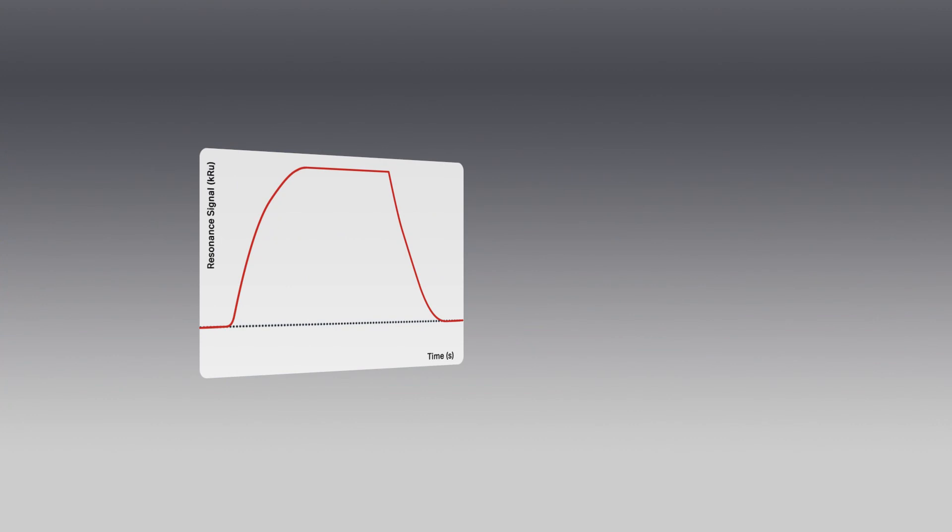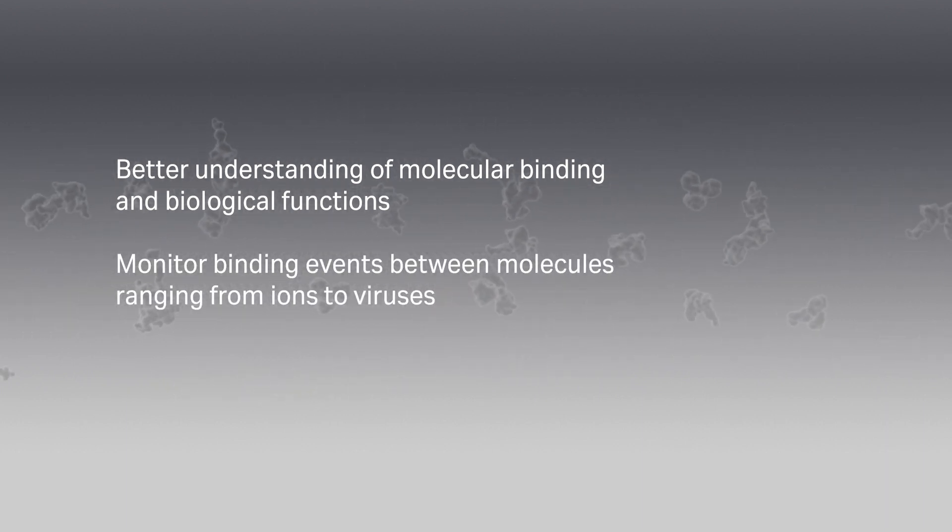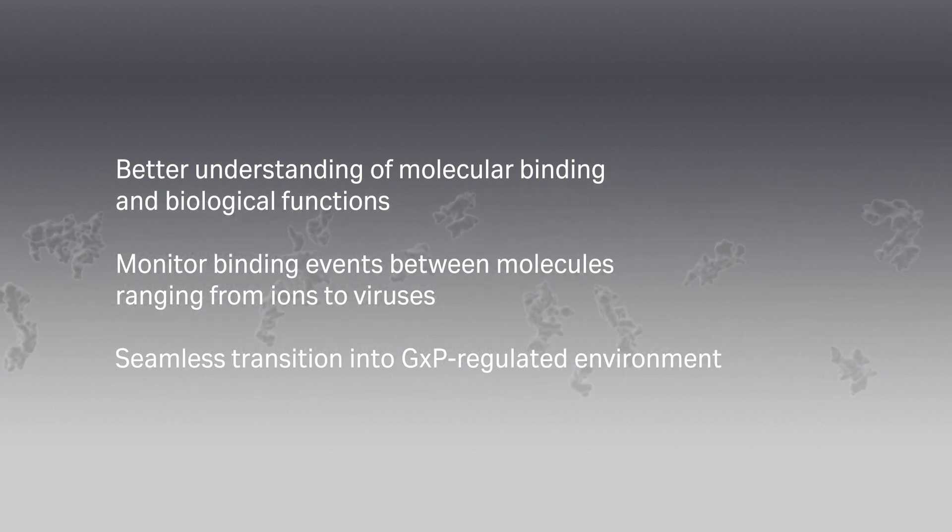From studying the shape of the sensorgram produced, binding yes or no, specificity, affinity, kinetics, and active binding concentration can be determined. The sensorgram provides real-time information about the entire interaction. This means that in a single SPR experiment, you have now obtained a wealth of information about your binding, which helps you understand the dynamics of the interaction or to quantify your analyte. And all of this without using labels.